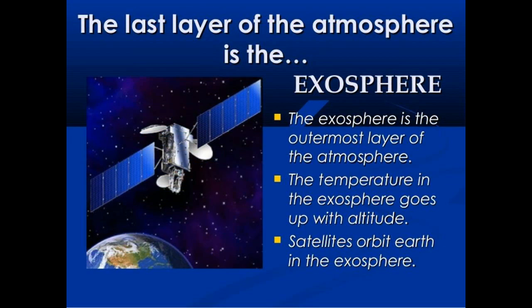The last layer of the atmosphere is the exosphere — the uppermost layer. It starts at the top of the thermosphere and continues until it merges with space. Temperature increases with altitude in this layer due to solar radiation and can exceed 4000 degrees Celsius. Hydrogen and helium are the main gases of this layer, but they exist only in very small quantities because of the absence of gravity.